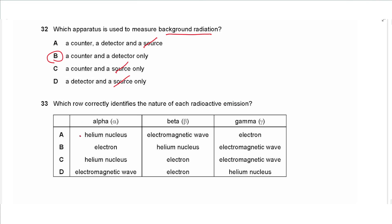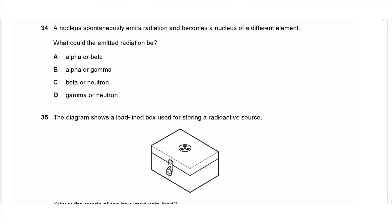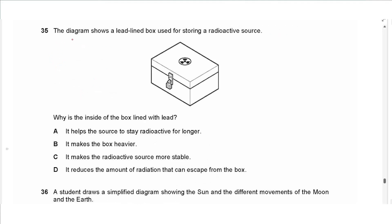Question 33 says which row correctly identifies the nature of each radioactive emission. So an alpha particle is a helium nucleus, a beta particle is an electron, gamma radiation is an electromagnetic wave. So the common choice is C. Question 34 says a nucleus spontaneously emits radiation and becomes a nucleus of a different element. What could the emitted radiation be? So if we change to another element that means that's alpha or beta. No, gamma radiation and neutrons are not radioactive emissions, so the answer is A.